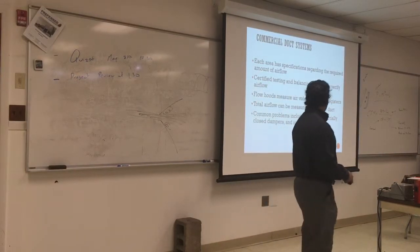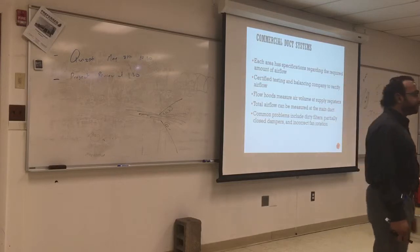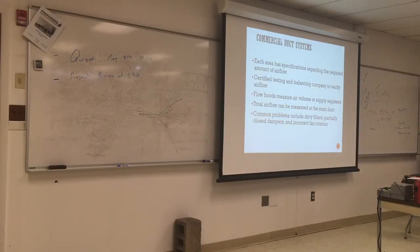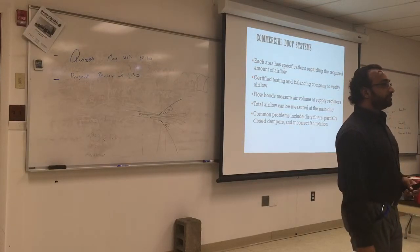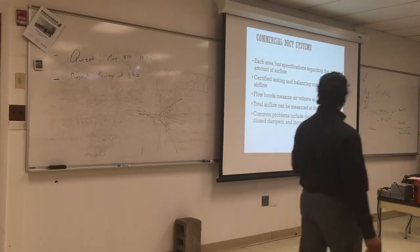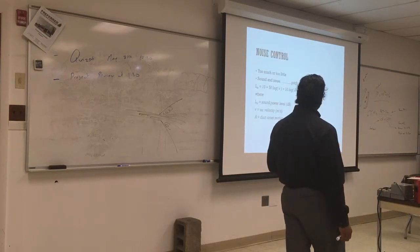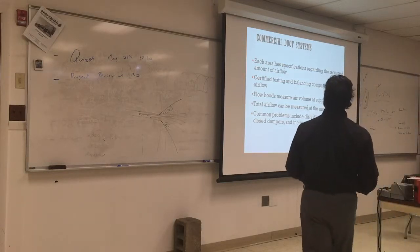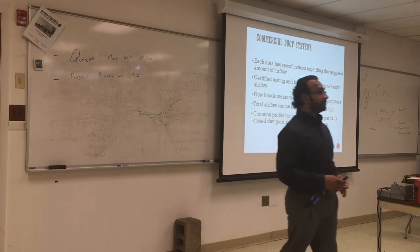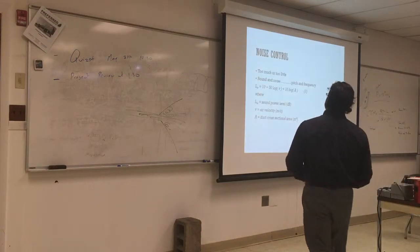Common problems include dirty filters, partially closed dampers, and incorrect fan rotation. Incorrect fan rotation is very common. Sometimes the fan is not turning the right way and it could be a problem with the air flow. Some dampers are not closed fully, so that will leak some air and disturb your pressure flow in the duct system. Somebody might replace the fan and put the blades the wrong way. That's why they always tell you which way is outside and put an arrow on it. It does happen sometimes when you replace the fan and put it the wrong way and reverse the flow.